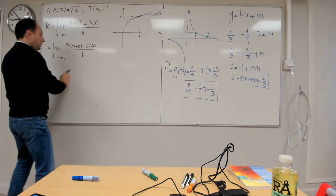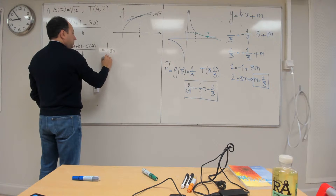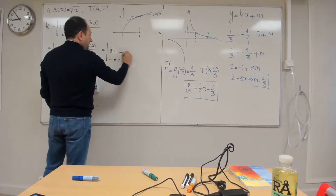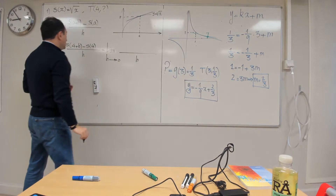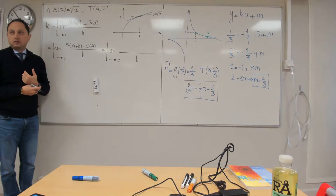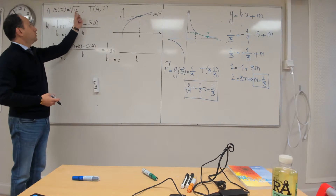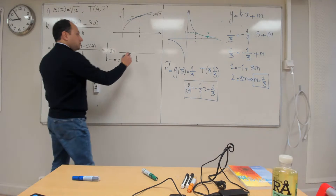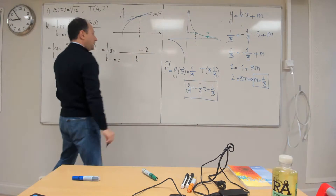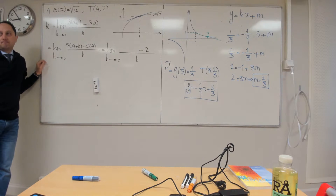Now help me write the rest. What should I write instead of s of 4? It's 2, because s of 4 means the square root of 4, which is 2. So it becomes 2 in that position. And then I have a negative sign here. What should I replace for s of 4 plus h? It is the square root of 4 plus h. It's very important not to get confused here.